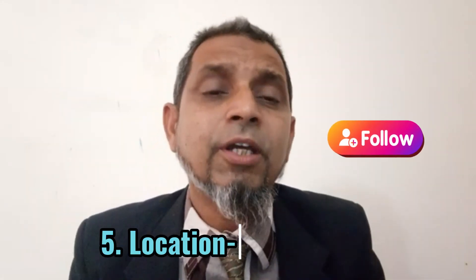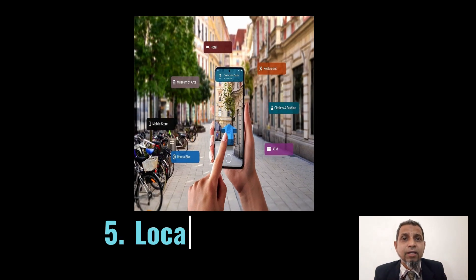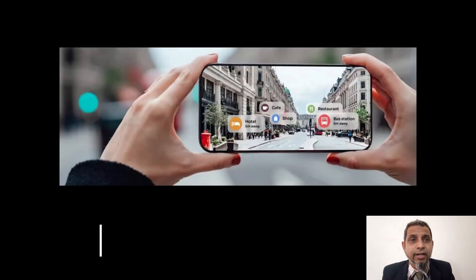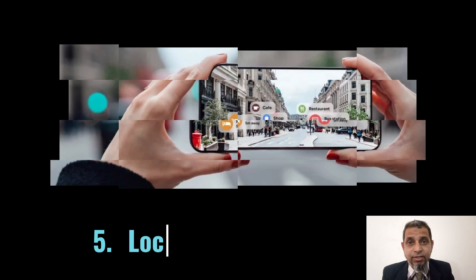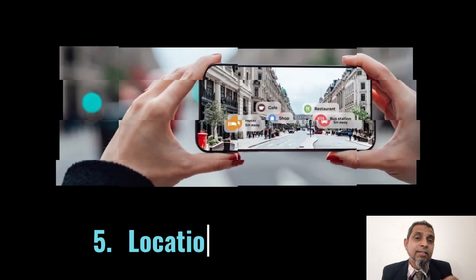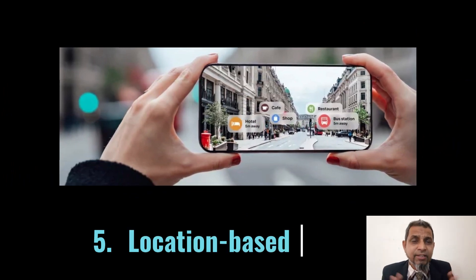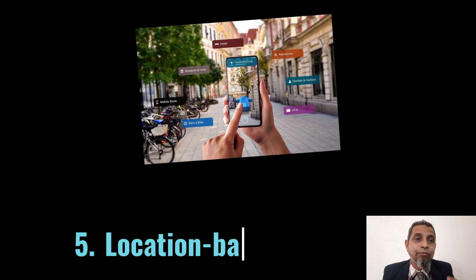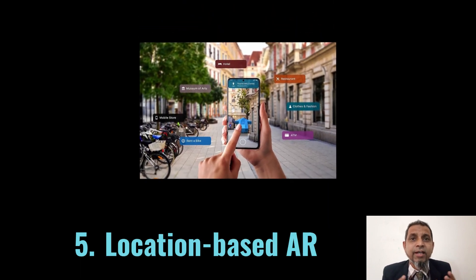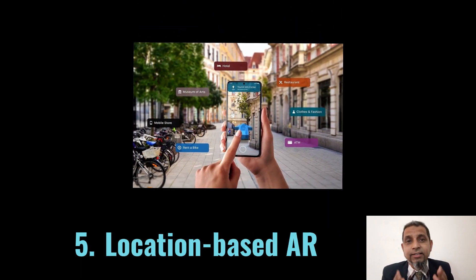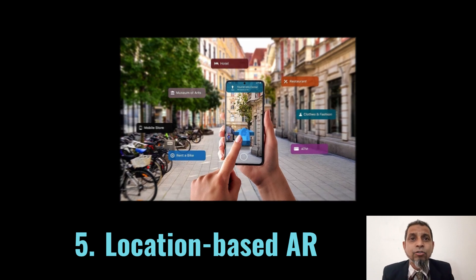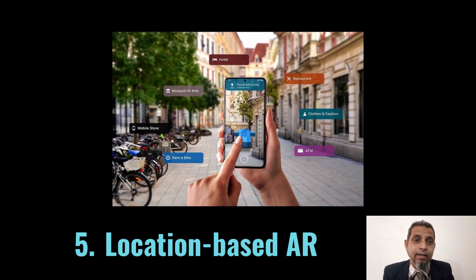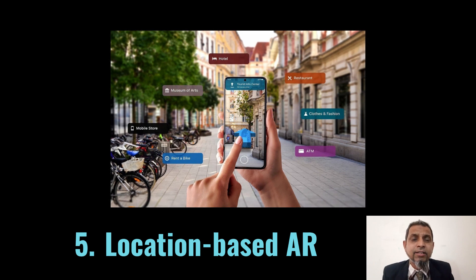Number five — location-based AR. Location-based augmented reality refers to the integration of digital information — such as 3D models, text, and other interactive elements — into the physical world using devices such as smartphones, tablets, or head-worn devices like AR glasses.